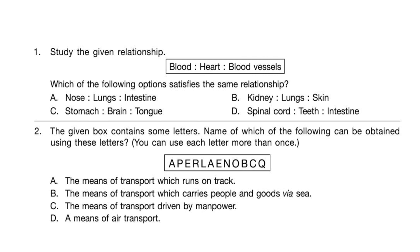Question 1: Study the given relationship. Blood is to heart as blood is to blood vessels. Which of the following options satisfies the same relationship? The correct answer is option B: Kidney, lungs, and skin — all these are parts of the excretory system.